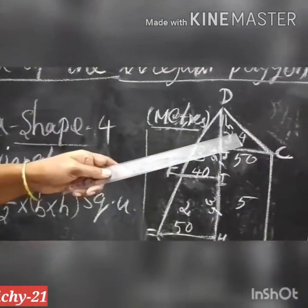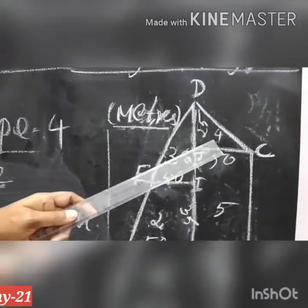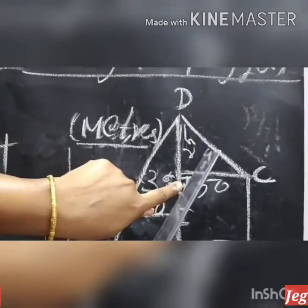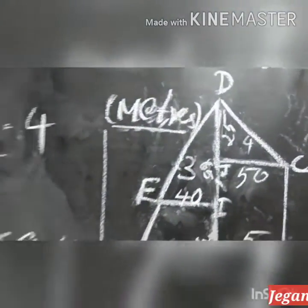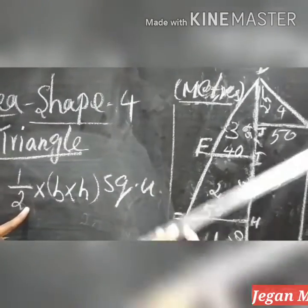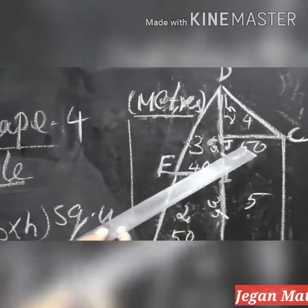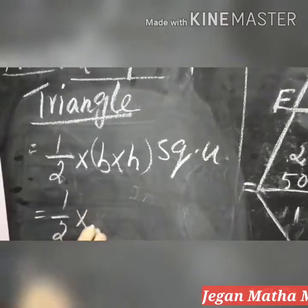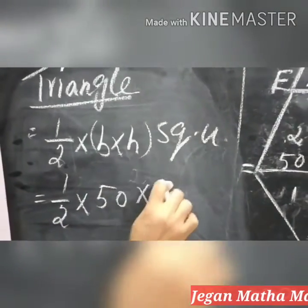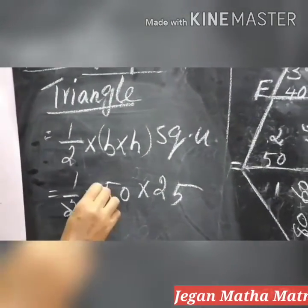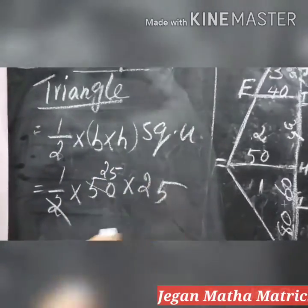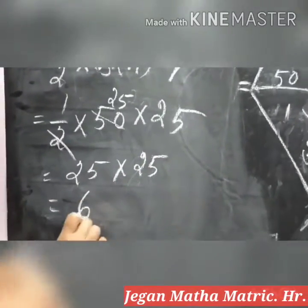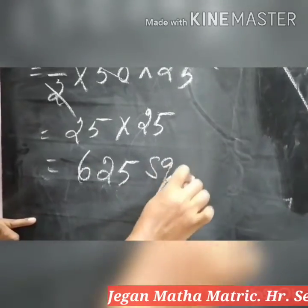Now let us see the 4th shape. Shape 4 is again a triangle - C, J, D. Area of the triangle is half into base into height square units. Here in the 4th shape, base is 50 meters and height is 25 meters. So: half into 50 into 25 - cancel 2 and 50 to get 25, then 25 into 25 gives 625 square meters.